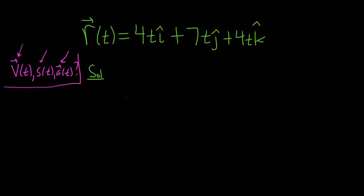To find the velocity vector, all we have to do is take the derivative of the position vector. So the velocity vector, v of t, is simply the derivative of r.